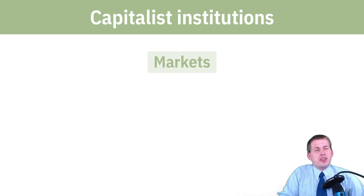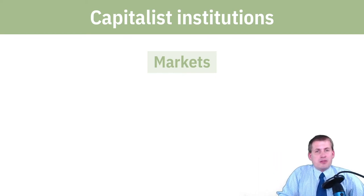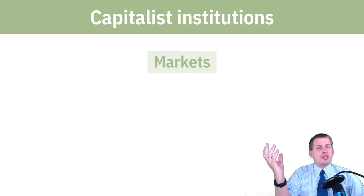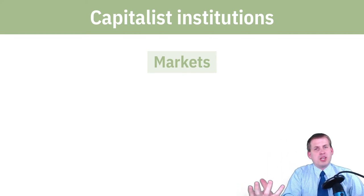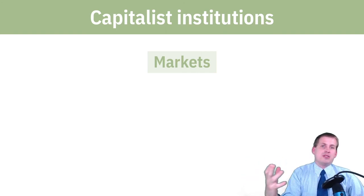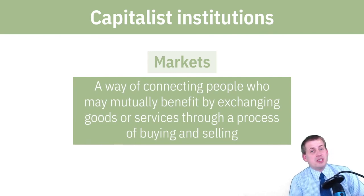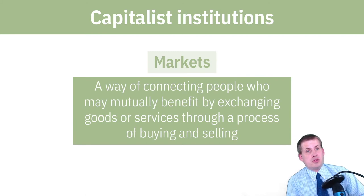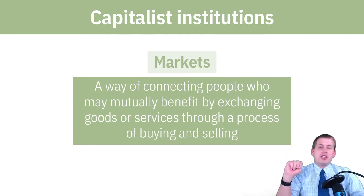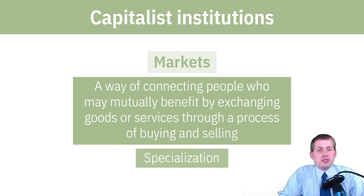The second core institution is markets. Markets aren't necessarily a physical building — there's no Department of Markets. It's just rules and informal requirements around making trades with your private property. You can have a market through Craigslist, Facebook Marketplace, or other avenues. It's any way of connecting people who could benefit from each other's goods and services — a method of connecting people and passing private property between them.